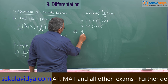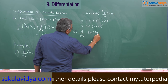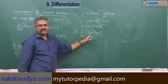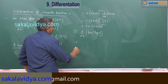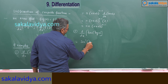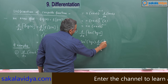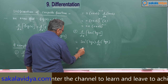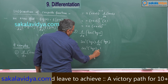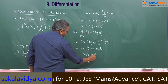Second example: d/dx of tan(log x). First, take the derivative of tan, then multiply by the derivative of log x. The derivative of tan is secant squared, so we get secant squared of (log x) into d/dx of log x. The derivative of log x is 1/x. So this becomes secant squared(log x) divided by x.